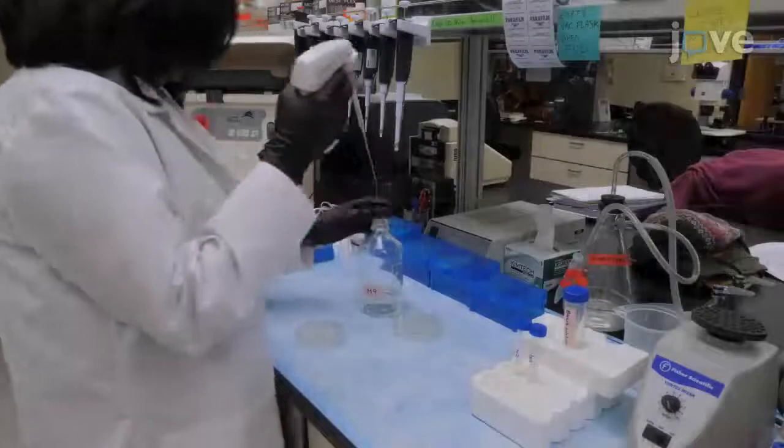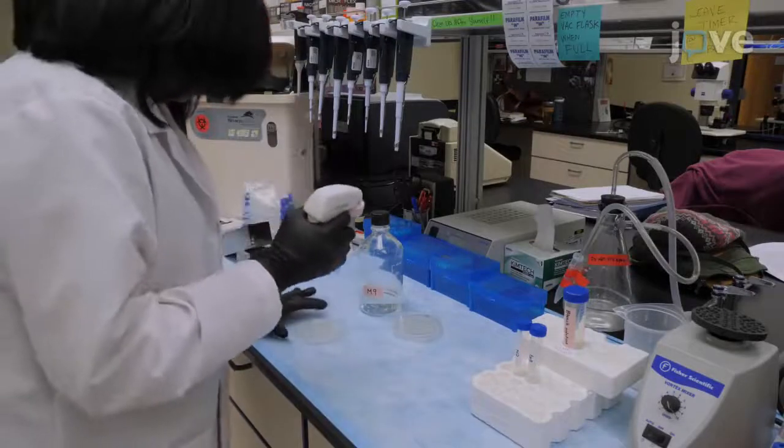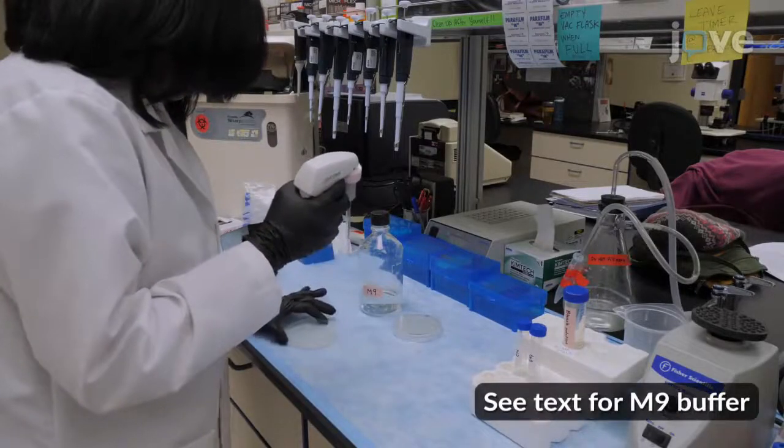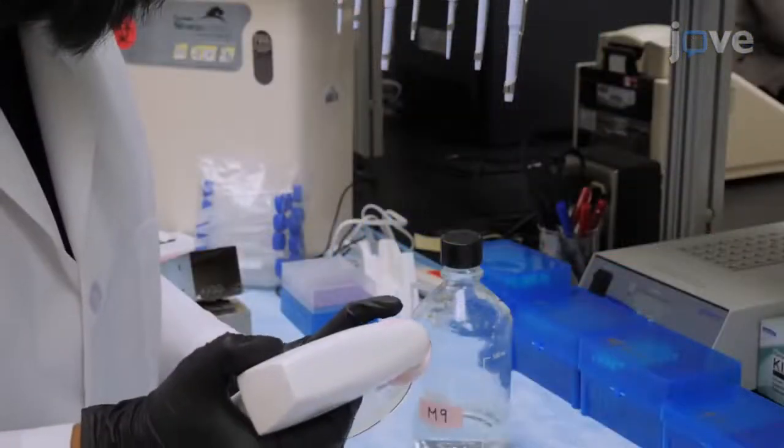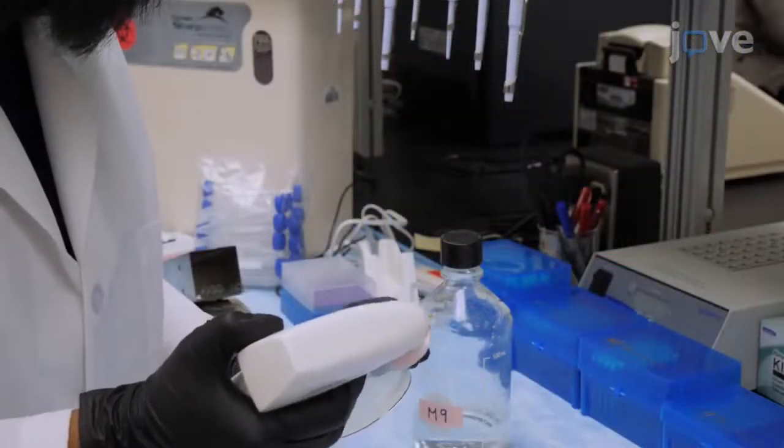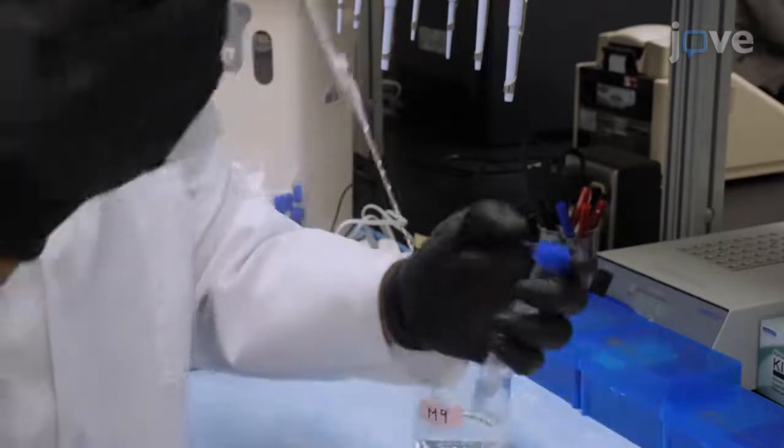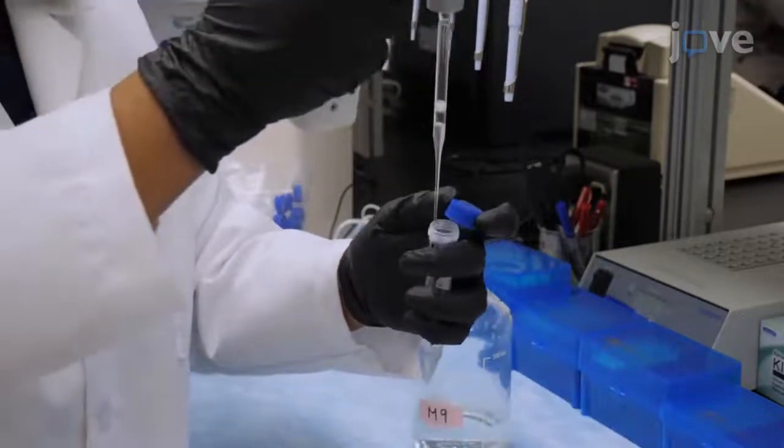Wash the eggs and worms off the plates using approximately six milliliters of M9 buffer per 100 millimeter plate of nematodes. Using glass pasteur pipettes, transfer the eggs and worms into individual 15 milliliter centrifuge tubes for each strain.